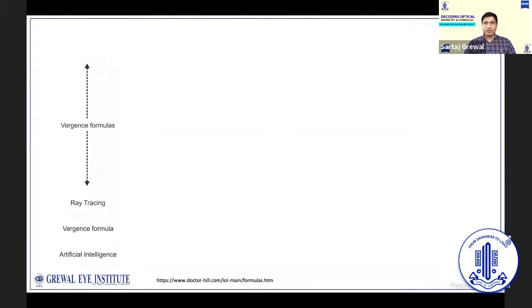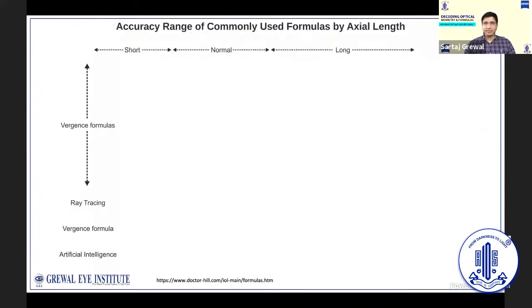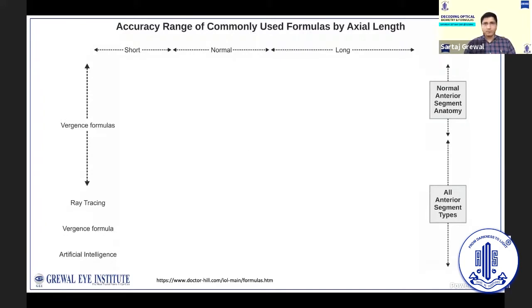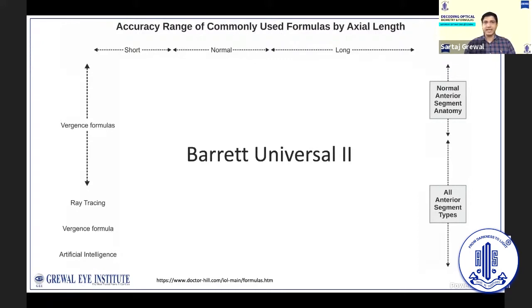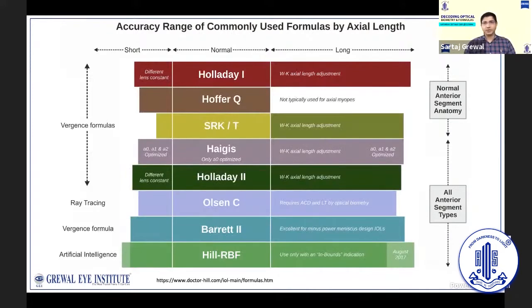Thanks to the work of Melles et al., we have evaluated IOL formula performance on the basis of axial length and anterior segment characteristics. Overall, the Barrett appeared to have the least bias with variations in axial length, keratometry, anterior chamber depth, and lens thickness. So it is possible to rely on one formula for all IOL calculations, but it is always better to compare across a few formulas such as the SRK/T, Olsen, and Hill RBF to be sure.